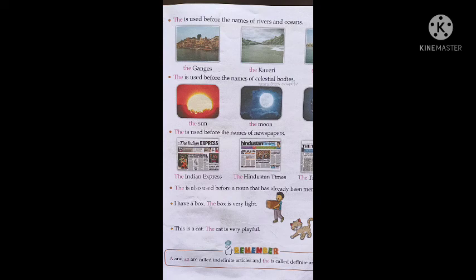'The' is used before the names of rivers and oceans — the ka prayog kahan pe karein ge? Kisi river ya ocean ke naam ke pahle. For example: the Ganges, the Kaveri, the Thames. So before these names we use 'the'.